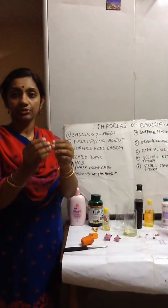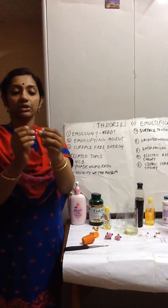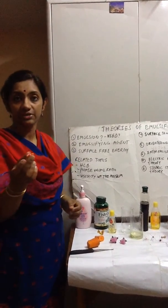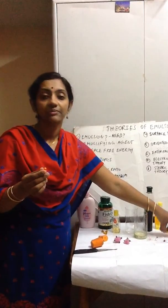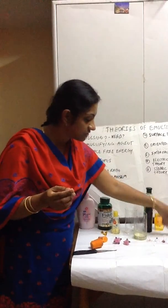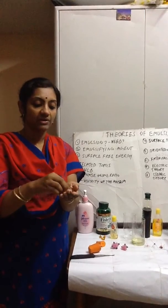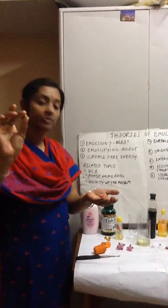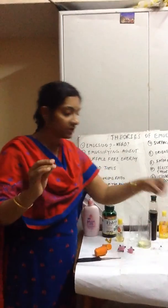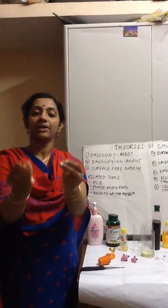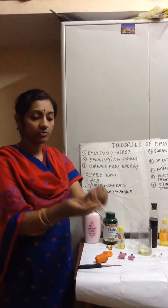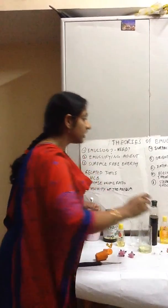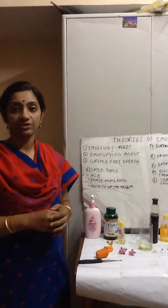Next is the interfacial film theory. Here we have thermocol balls to depict the globules — each of them is a globule and they try to come together and coalesce. In the interfacial film theory, emulsifying agents form an interfacial barrier by coating the globule. Because you have a barrier on the globule, they don't tend to coalesce. This is the interfacial or plastic film theory.